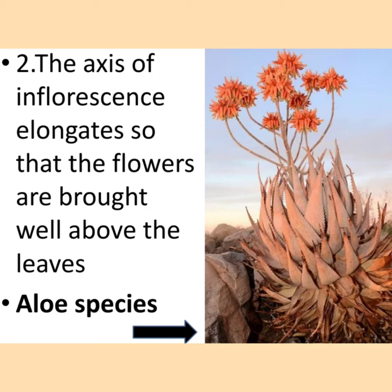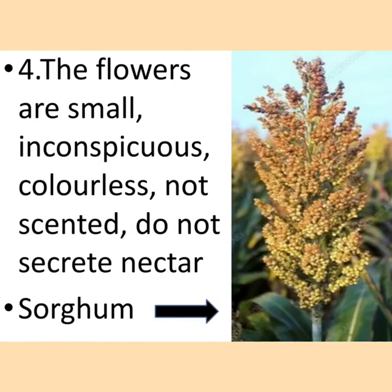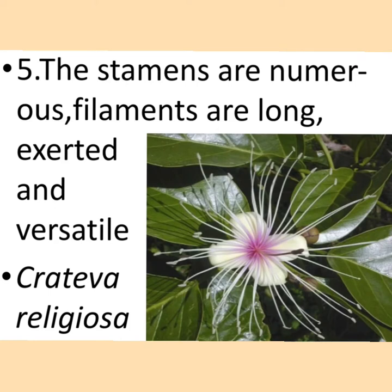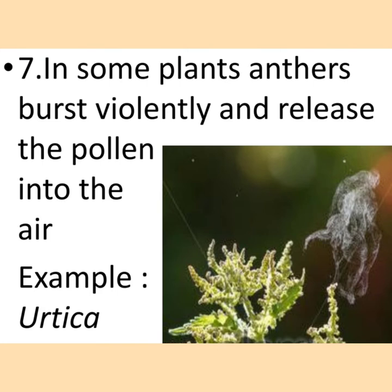Number two, the axis of the inflorescence elongates so that the flowers are brought well above the leaves — you can see the image of Aloe species where the flowers are above the leaves. Number three, the perianth is absent or slightly reduced. Number four, the flowers are small, inconspicuous, colorless, not scented, and do not secrete nectar — example is Sorghum. Number five, the stamens are numerous, filaments are long, exserted and versatile — you can see this in Crataeva religiosa. Number six, the anthers produce enormous quantities of pollen grains that are minute, light, and dry so that they can be easily carried long distances by the wind. In some plants anthers burst violently and release the pollen into the air — example Urtica.